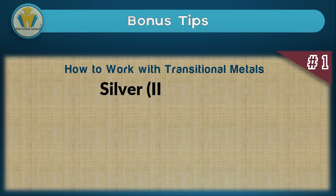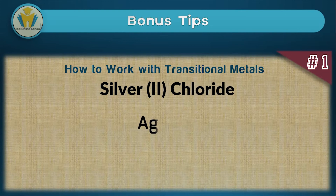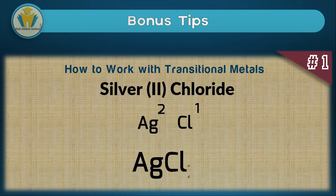Another example is silver(II) chloride. Note that silver's symbol is Ag — not Si, which is silicon. We apply the same swap principle with the valences and get our chemical formula for silver(II) chloride. As you get used to chemistry, these chemical symbols will become second nature.